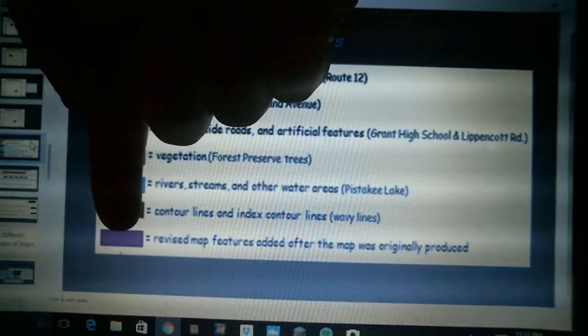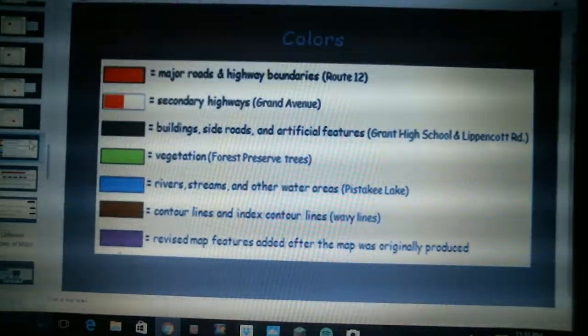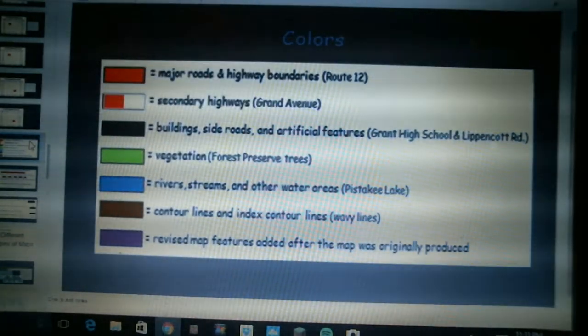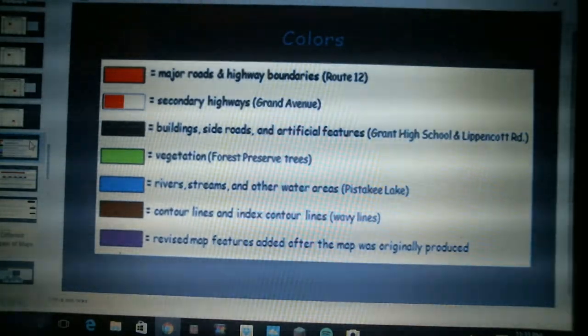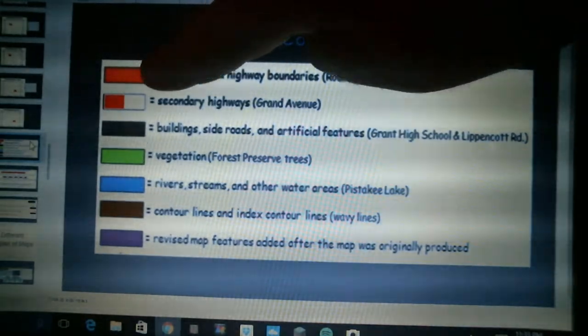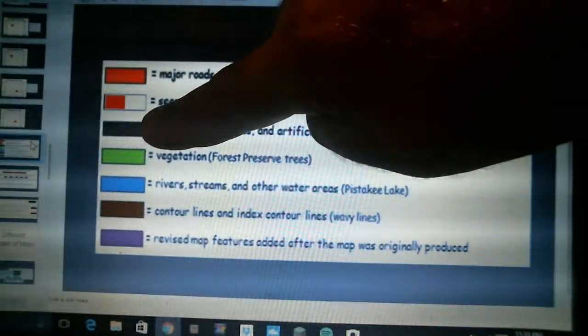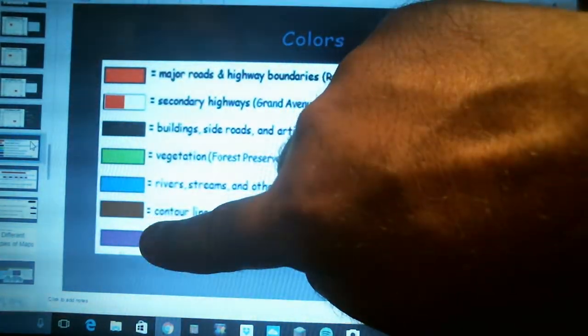These are the squiggly lines I talked about before that show you the areas of same altitude. And then purple here is revised map features that are added after the map was originally produced. So go ahead and pause the video, get some colored pencils and please color in your boxes here in the same order. We have red, red white, black, green, blue, brown and purple.